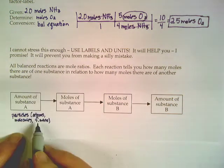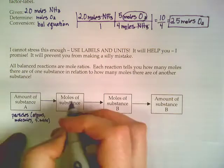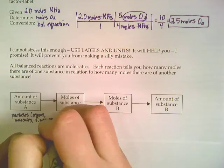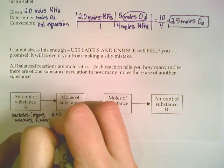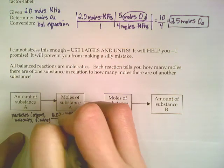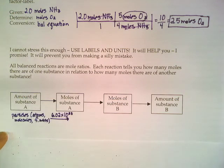Now, if you wanted to get those particles into moles to get from here to here, you would need to use that 6.02 times 10 to the 23rd number.